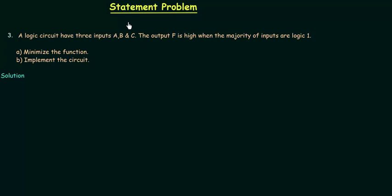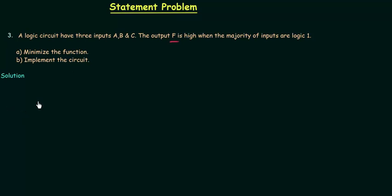Welcome to this presentation. We are going to solve another statement problem. A logic circuit has three inputs a, b, and c. The output f is high when the majority of inputs are logic 1. We have to minimize the function f and implement this circuit.